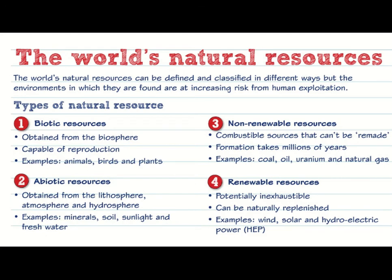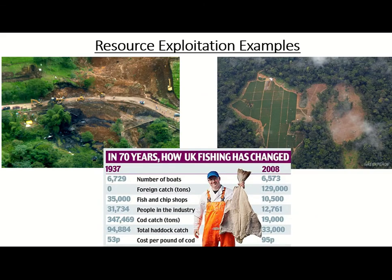In an exam, they might ask you to name a biotic or abiotic resource, or define renewable or non-renewable. For renewable, you could say they are resources which are potentially inexhaustible. Avoid grey-area examples like uranium or biomass. If asked to name two biotic resources, don't say animals and birds — birds are animals. Be specific: birds and pigs, or birds and oak trees. Don't say trees and plants either, as a tree is just a type of plant.